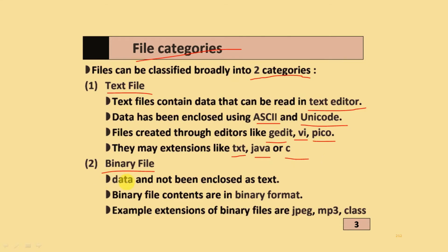Binary Files contain data that is not encoded as text — data is stored in binary format. Examples of binary file extensions include .jpg, .mp3, .class, and others.